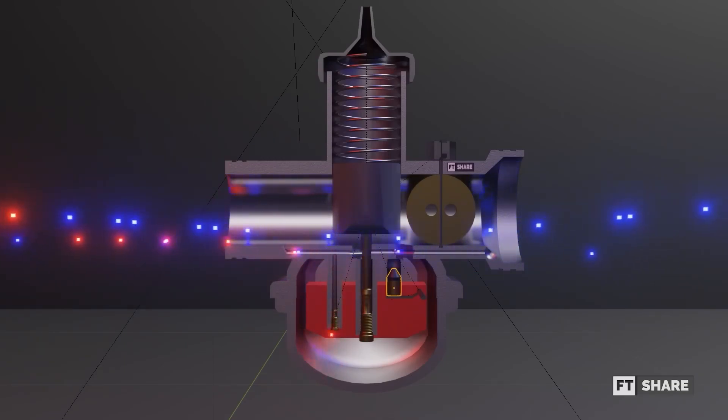Typically, when the engine is still cold, the RPM cannot remain stable. The temperature of the combustion chamber can affect the results of combustion. However, this issue can be resolved by adjusting the choke lever on the carburetor.